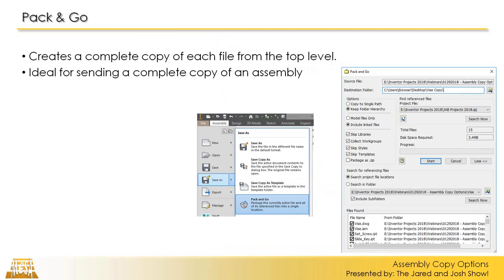Vault also has a Pack and Go feature. It works pretty much the same as the Inventor Pack and Go, just a little bit more robust. You have the ability to copy into a single pass, publish directly to SharePoint if you have Vault Professional, and set up Pack and Go to email files directly to a customer or someone in the inner office that doesn't have access to Vault. You can send the entire assembly, a drawing, or just anything out of Vault.